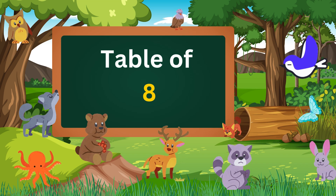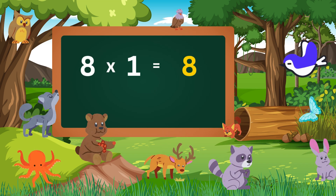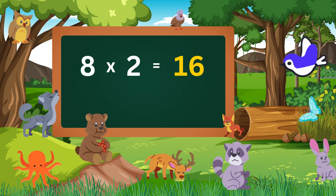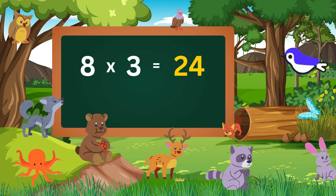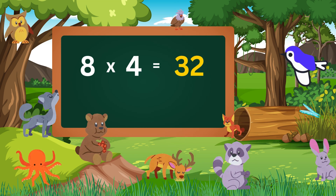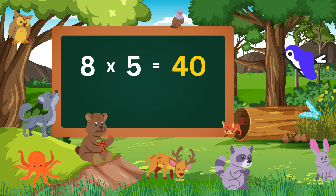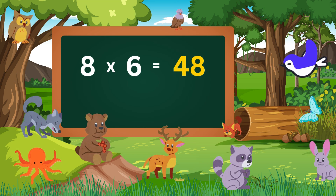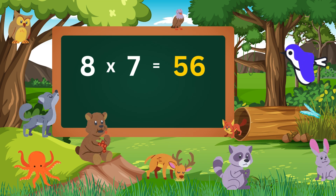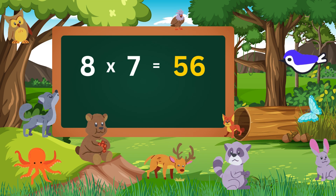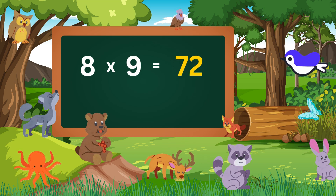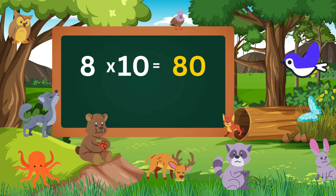Table of eight. Eight ones are eight. Eight twos are sixteen. Eight threes are twenty-four. Eight fours are thirty-two. Eight fives are forty-eight. Eight sixes are forty-eight. Eight sevens are fifty-six. Eight eights are sixty-four. Eight nines are seventy-two. Eight tens are eighty.